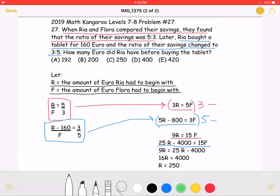I multiplied by 3 here and 5 here in order to get both equations equal to 15F. By doing this, I can set them equal to each other, as shown here. 9R from over here is equal to 25R minus 4000 from over here, as both of them are equal to 15F.